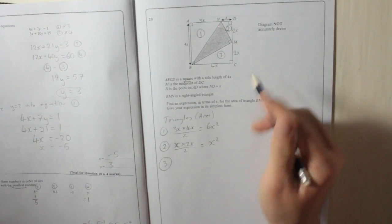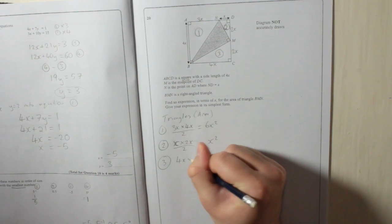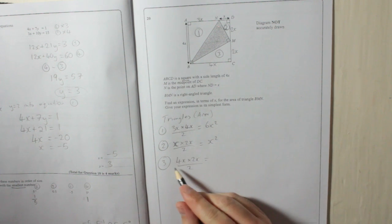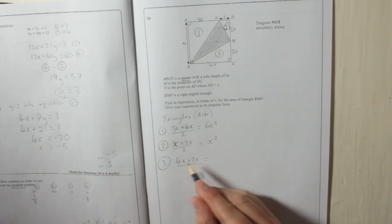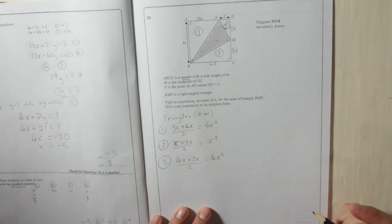Triangle 3. 4X times 2X divided by 2. So, 4X times 2X divided by 2. So, 4 times 2 is 8, X times X is X squared. So, 8X squared divided by 2 is 4X squared. So, there's our three triangles.